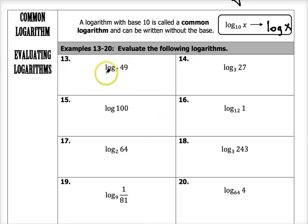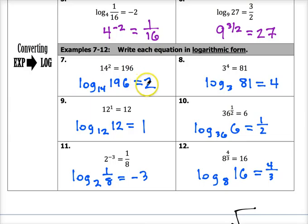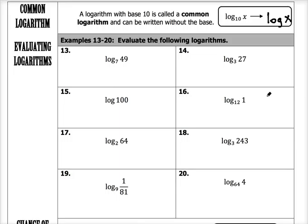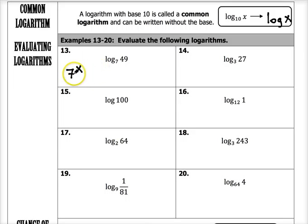For problems 13 through 20 we're going to practice evaluating these logarithms — our job is to find what each logarithm is actually equal to. The answer to a logarithm is always the exponent. The easiest way to do this is to rewrite it as an exponential equation. So log base 7 of 49 means 7 to the x power equals 49. Seven to what power is 49? x equals 2. So log base 7 of 49 is equal to 2.